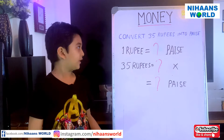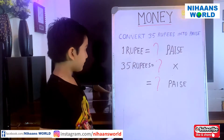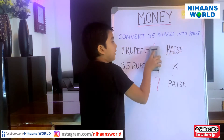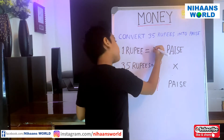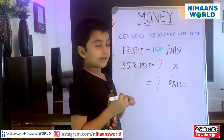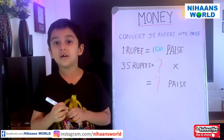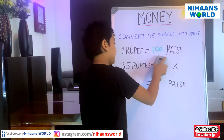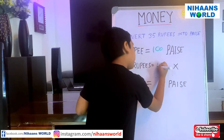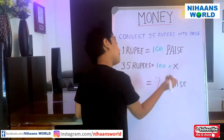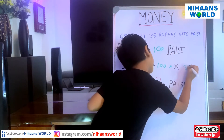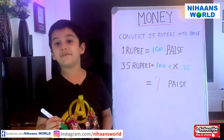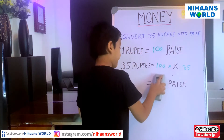Friends, now let us convert 35 rupees into paise. Since 1 rupee is equal to 100 paise, we write 100 here. So, 35 rupees is equal to 100 paise multiplied by 35. So, we write 3500 here. We got the answer 3500.